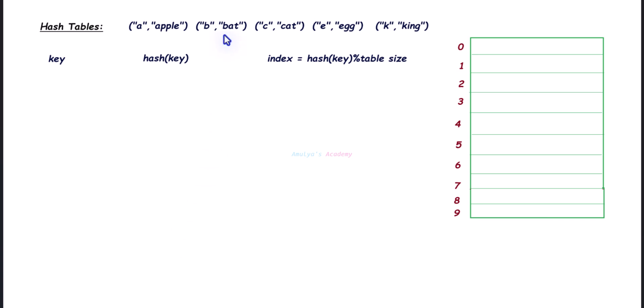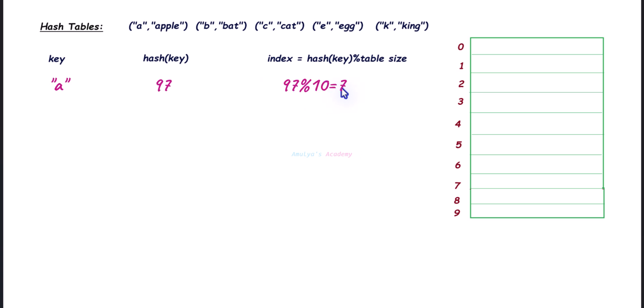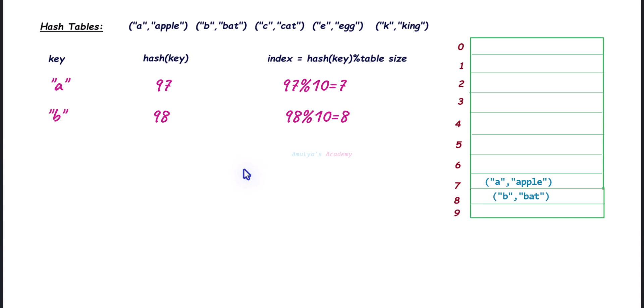First, a hash table calculates the hash code using a hash function. The hash function takes a key as input and outputs a hash code or hash value. Using that, you can find the index. For example, the hash value for 'a' is 97, which is its ASCII value. With a table size of 10, we get index 7 and store the value there. For 'b', the ASCII value is 98, so the index is 8, and we store it at index 8.